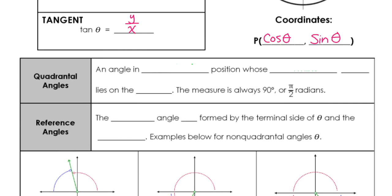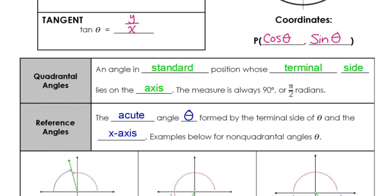Let's talk about a few more definitions before we move on. The first one is called a quadrantal angle — that is an angle in standard position, where it starts at that positive x-axis, and its terminal side is going to lie on an axis as well, either y or x, and the measure is going to be 90 degrees or pi over 2 radians. We also still have reference angles. A reference angle is the acute angle, denoted theta, formed by the terminal side of theta and the x-axis.